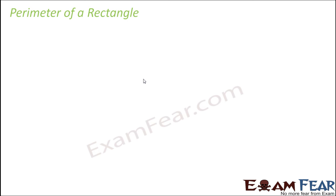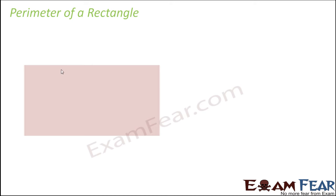Now let's see how we find the perimeter of different shapes, starting with the rectangle. A rectangle is a closed figure such that the opposite sides are equal. If we name it ABCD, then by the property of rectangle, sides AB and CD are equal in length and parallel to each other.